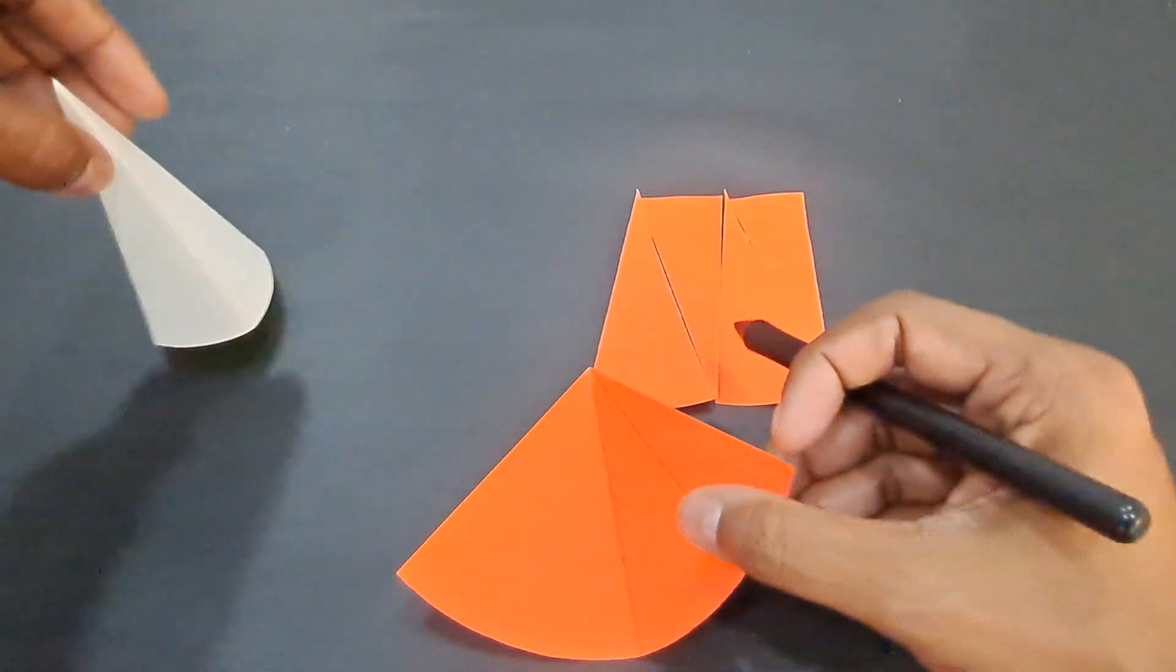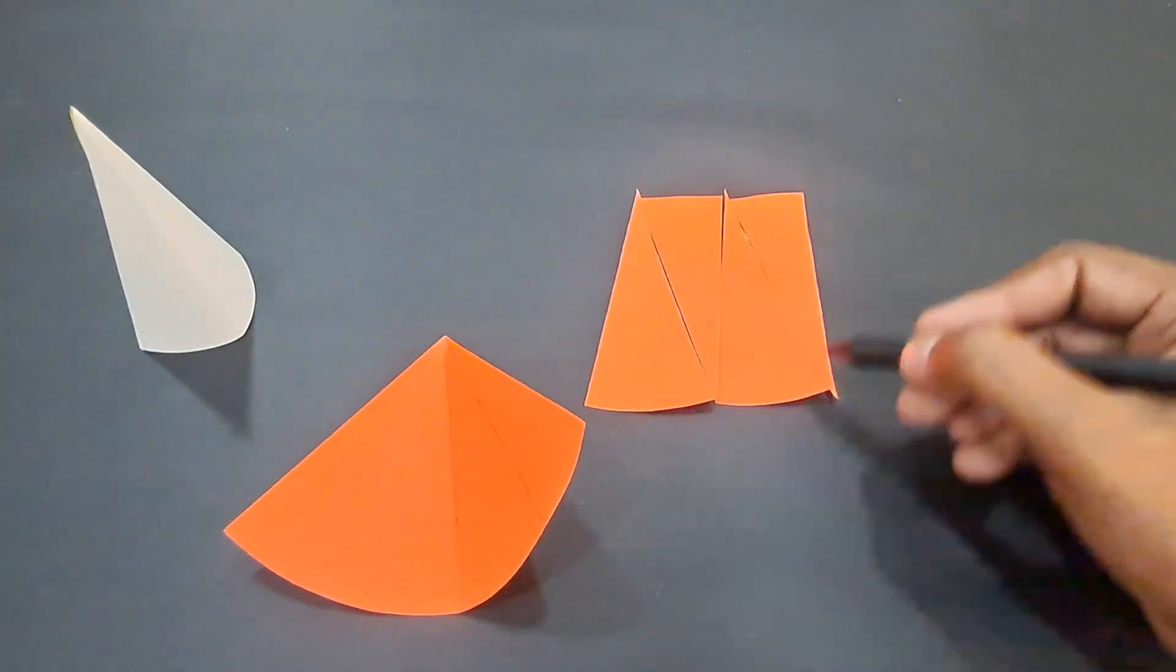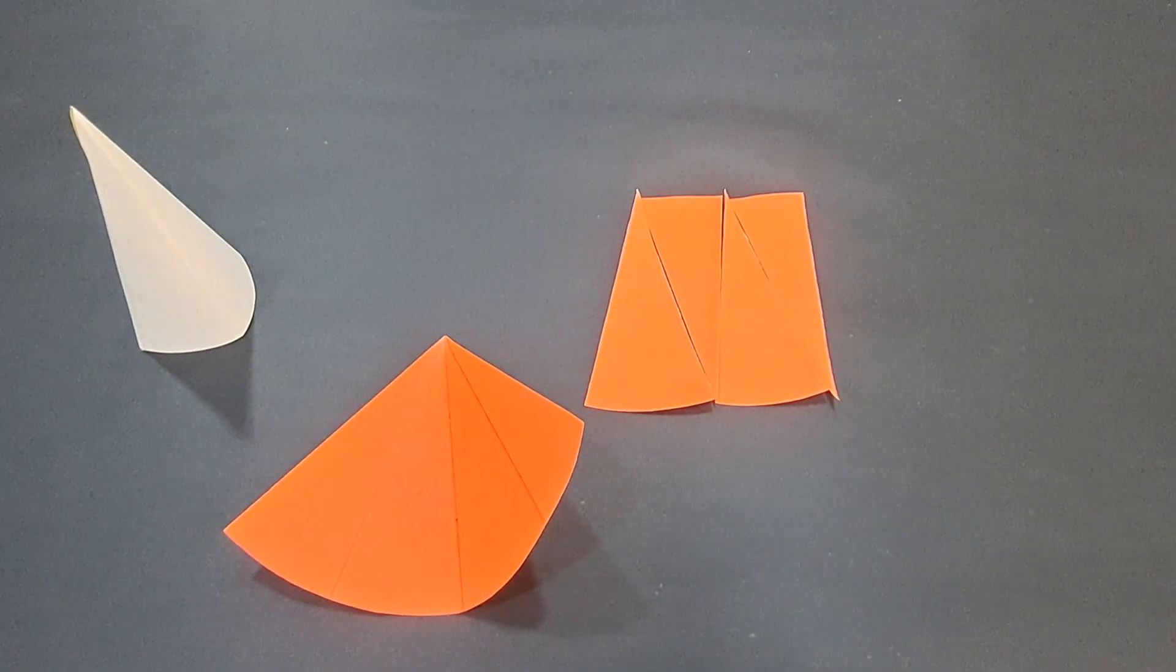the curved surface area of a cone is πrL, and that completes our activity on lateral surface area of a cone.